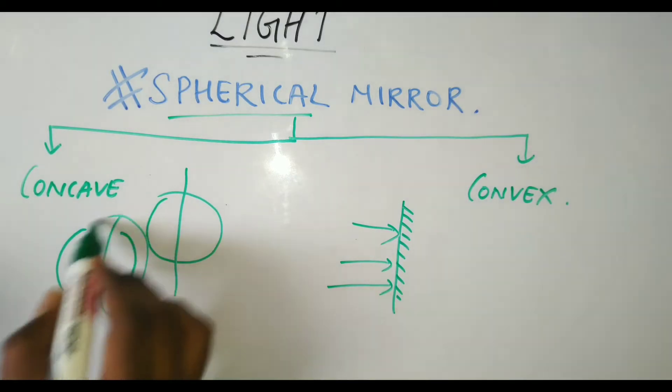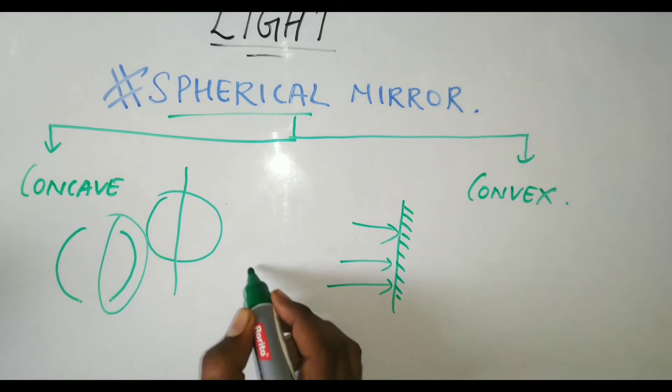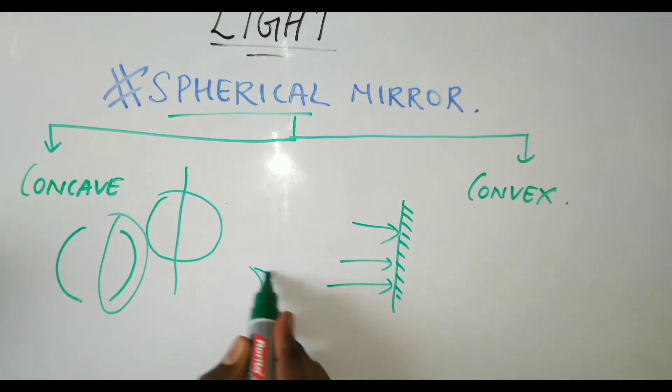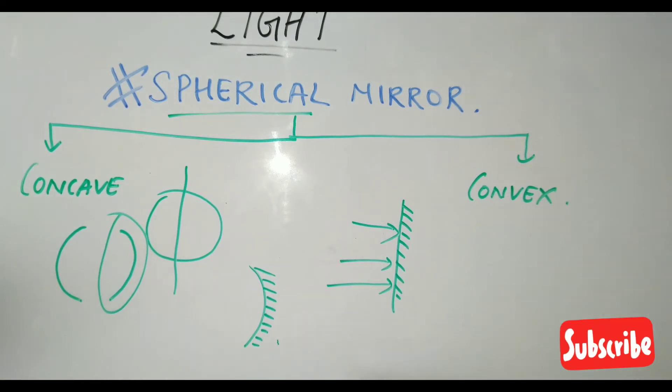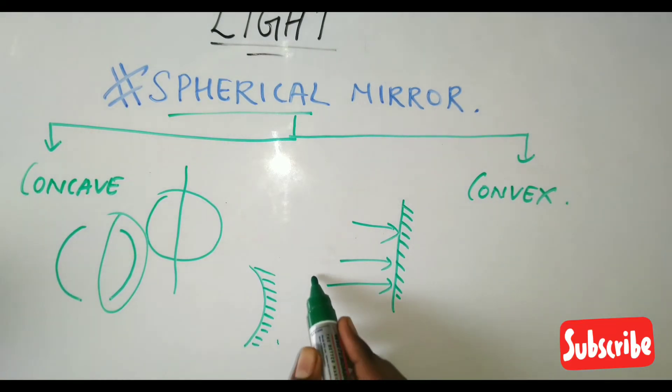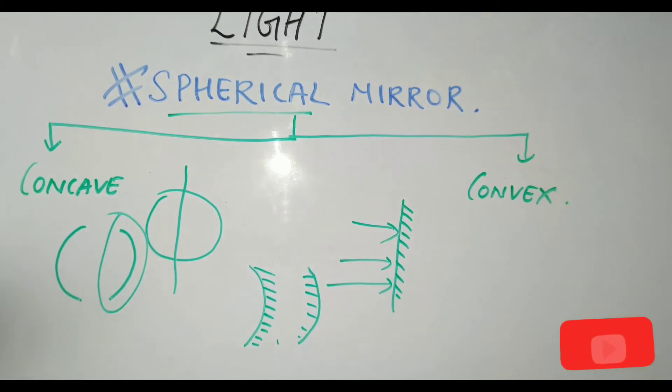If I paint the outer side, that means if I paint the outer side, then this will be called concave. And if I paint the inner side, that will be called convex.